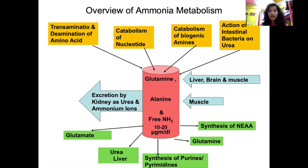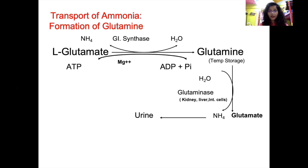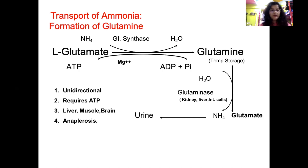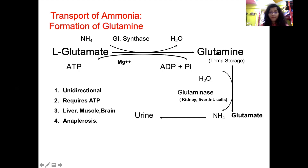The synthesis of ammonia was discussed in the last lecture, so we start from the transport of ammonia. There are two major transport forms: glutamine and alanine. In brain, muscle, and liver, ammonia combines with glutamate to form glutamine. This is a unidirectional reaction requiring ATP, which is broken down to ADP and inorganic phosphate. It also requires magnesium ions. Glutamine synthetase is present in liver, muscle, and brain, where it fixes ammonia to form glutamine.